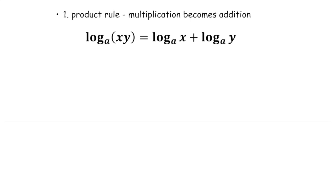Let's go through the first one. I would recommend that after we go through the example, push pause and write it down in your notes. This is multiplication becomes addition. A log base a turns into two different logs — both of them have the same base a. Whatever your base was initially, that's going to stay the same. Then these two components that are being multiplied, we just put an addition sign in between: instead of log base a of x times y, it's now log base a of x plus log base a of y.